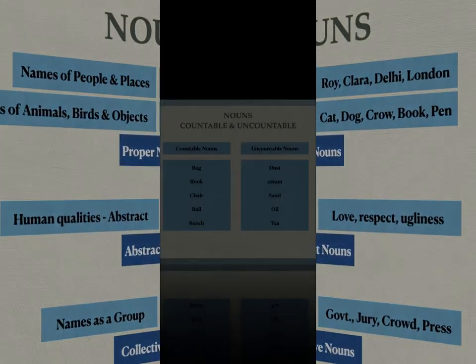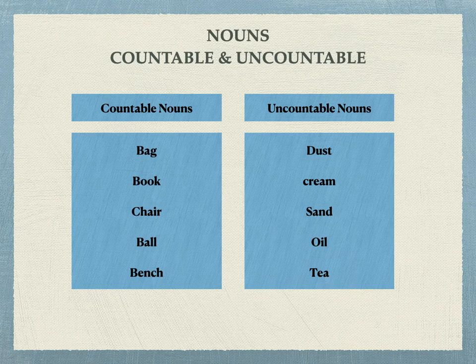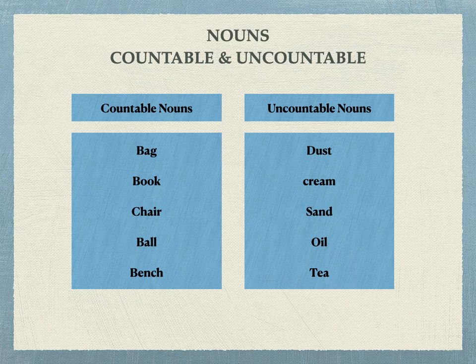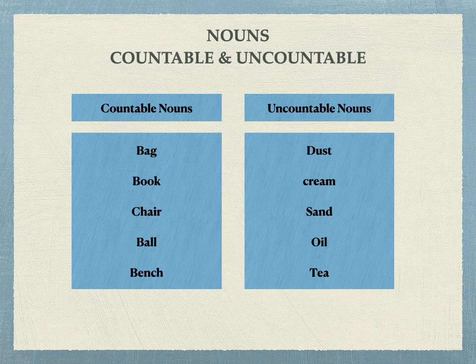Nouns can also be countable and uncountable. Countable nouns include bag, book, chair, ball, bench — things which you can count. For example, adding 's': bags, books, chairs, balls, benches. They are countable because you can add an 's' and make them plural. But with uncountable nouns — dust, cream, sand, oil, tea — you can't just add 's' and make them plural; they come in a different pattern.